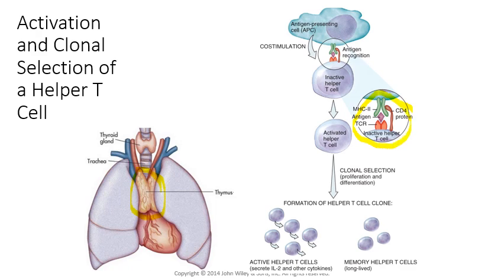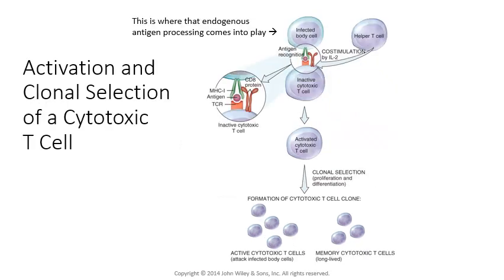That activation starts the production of all these clones — more helper T cells, memory cells, and cytotoxic T cells. Cytotoxic T cells can go out and directly kill an infected cell — one infected with a virus or other intracellular pathogen — causing it to either destroy itself or destroying it directly. This prevents the proliferation of the virus or whatever is infecting that cell.